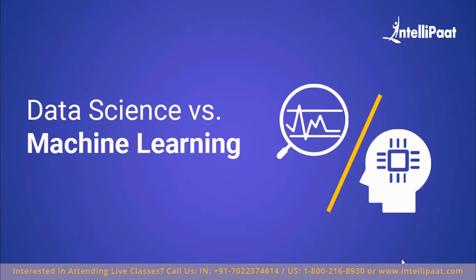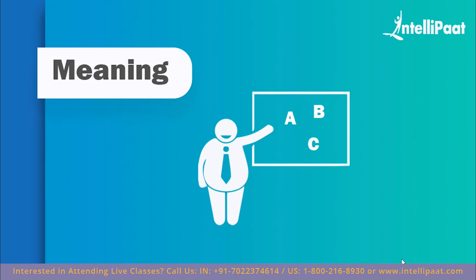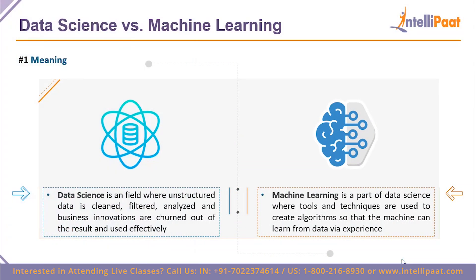Now for the direct head-on comparison between data science and machine learning. In terms of meaning: data science is a field where structured, unstructured, and semi-structured data goes through a process of being cleaned, filtered, and analyzed to produce useful results. Machine learning is actually a part of data science that uses multiple tools and techniques to create algorithms — the fundamental aspect of how a machine learns from data through experience.